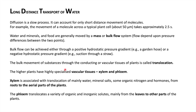Bulk movement of substances occurs through the vascular tissue of plants by the process of translocation. These vascular tissues are xylem and phloem. Xylem and phloem are associated with the translocation of water, minerals, organic compounds, nitrogen, and hormones from root to the aerial parts of the plant. Xylem transports these nutrients and minerals from root to aerial parts, while phloem translocates organic and inorganic solutes from leaves to other parts of the plant.